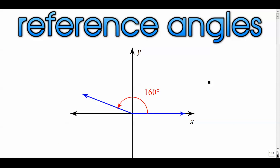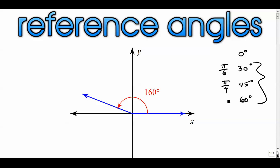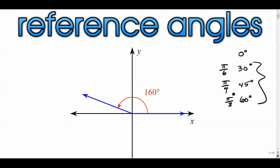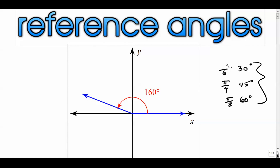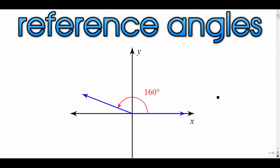We're going to talk about reference angles in a bit more detail. A reference angle is basically a way to take a somewhat challenging angle and make it easier to work with. This is going to really come into play when we focus on our special angles — particularly these three — and their radian equivalents, because the unit circle has really nice sine, cosine, and tangent values for those. Reference angles will be an important skill as we move into our unit circle discussion.